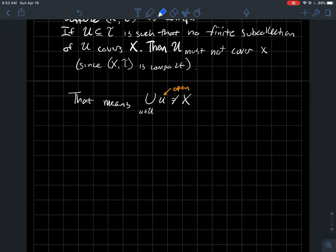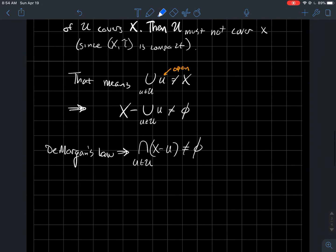If I take complements of both sides, that tells me the complement of this union has to be non-empty. We'll rewrite this using one of DeMorgan's laws, which says that the intersection of X minus U for all U in the cover U is non-empty.